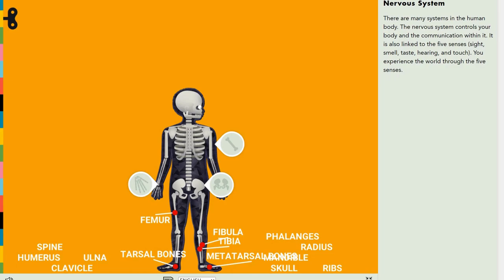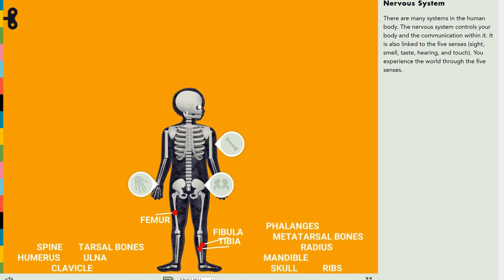Down there are your tarsal bones — basically the back of your foot bones. In the middle are the metatarsal bones, and in the front are the phalanges. It's the same definition for both feet and hands — keep that in mind.